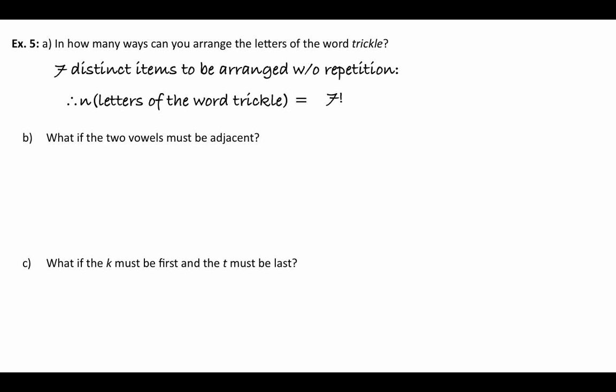We want to arrange all seven letters into seven spots — seven distinct items arranged without repetition. That's seven factorial ways: 7 times 6 times 5 times 4 times 3 times 2 times 1, which gives 5,040. You could use the organized counting principles from lessons 1 and 2, but this is faster and more efficient — just two buttons on your calculator.